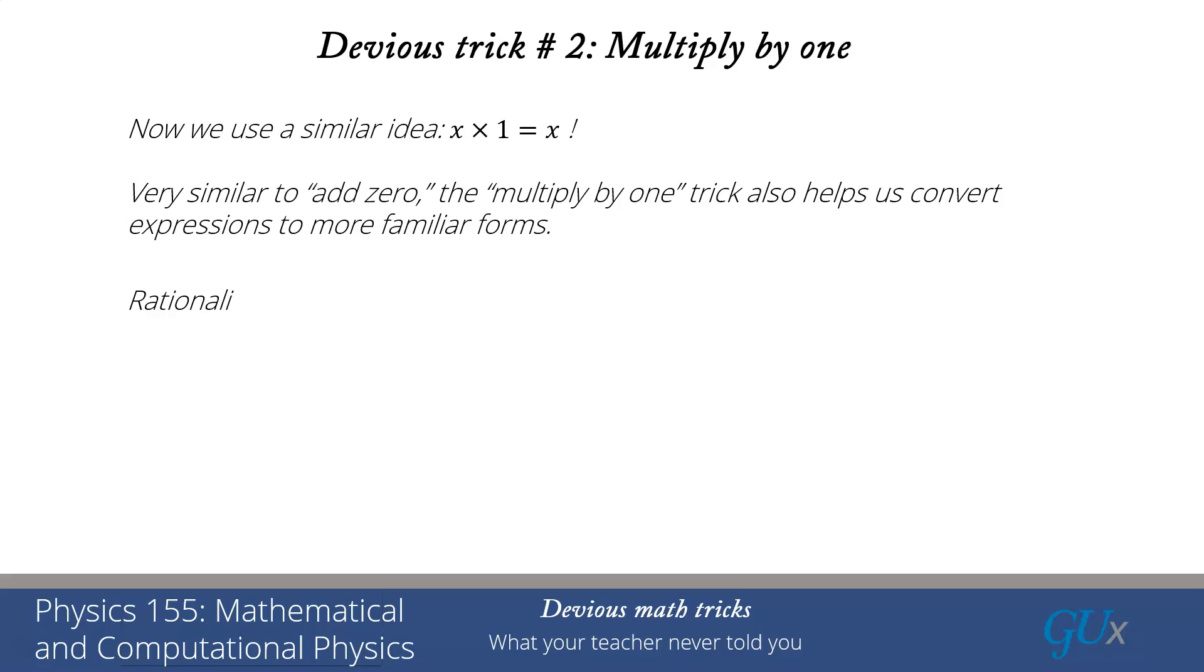It often is taught in the form of rationalizing the denominator if you have square roots in a denominator. Here, I want to multiply this by 1 and get rid of the square roots in the denominator. The multiply by 1 is, of course, going to be (1 minus 2√3) divided by (1 minus 2√3). Knowing that when I take a product of the sums times the product of the differences, I get the difference of the squares.